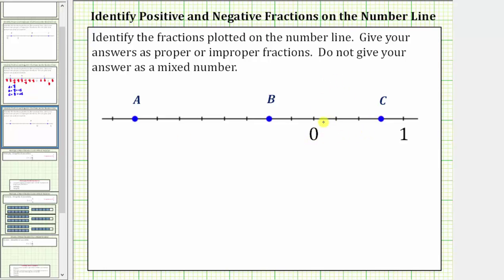Starting at zero moving to the right, we have zero, one fourth, two fourths — which is equivalent to one half — three fourths, and four fourths — which is equivalent to one.